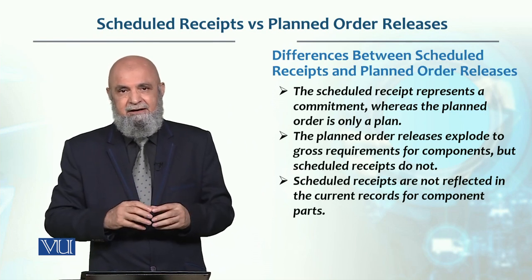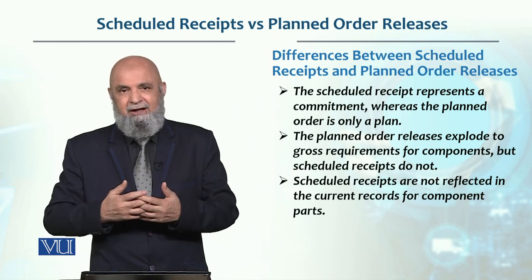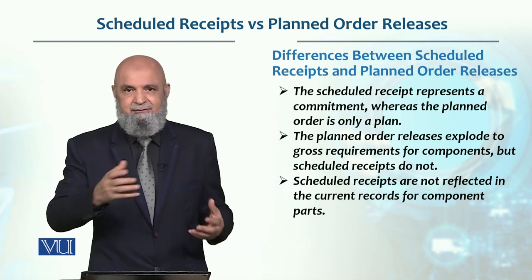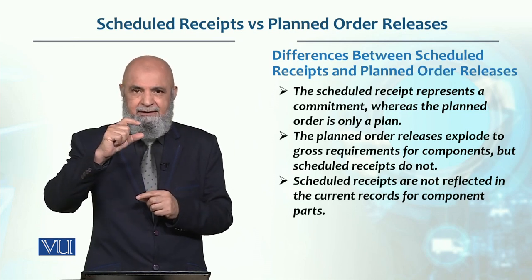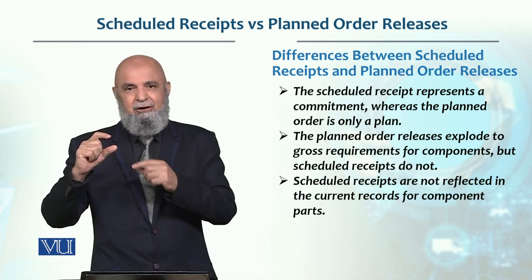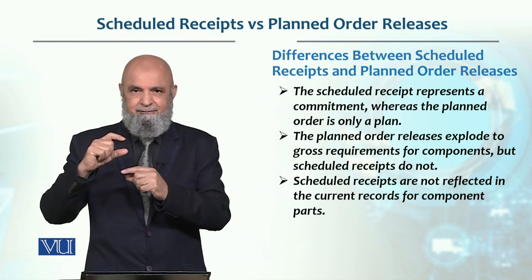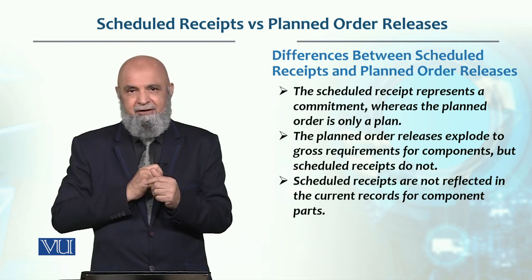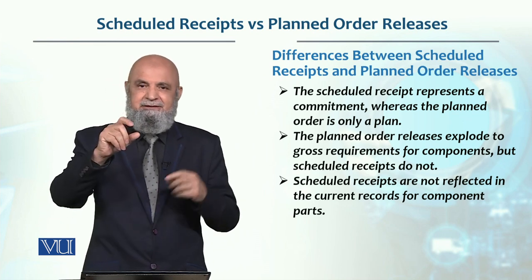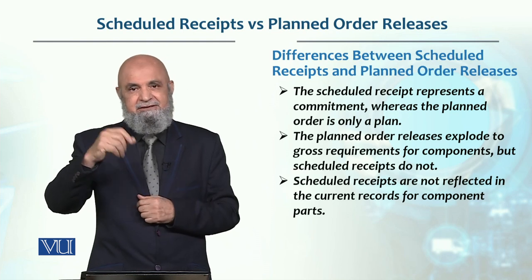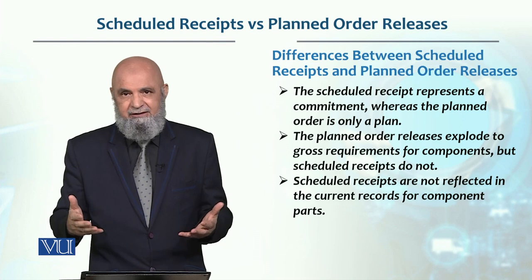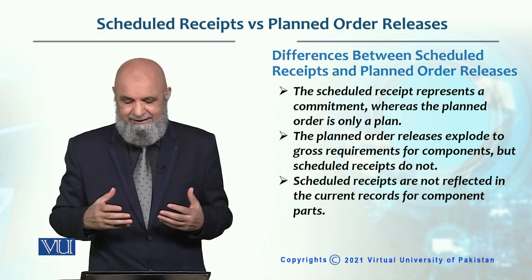Whereas Scheduled Receipts do not do this. Scheduled Receipts, in the system, kind of do not exist for determining what components are needed to produce something. Basically, if the parent — let's say X — had to start production in the third week, then Z's availability must be there in the third week. We determine that from the plan. But once X has moved into Scheduled Receipts, it means its production has already started — delivery is now pending, all that work is already done. So it is not exploded, and its requirement is not converted into a gross requirement.